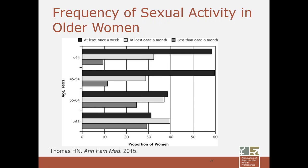From the same study, this slide works well for discussing norms of frequency of sexual activity in older women. People often ask whether their desire and frequency of sex is normal or abnormal. As one might expect, sexual activity in older women by age category was decreased but not absent. Less frequent activity — at least once a month or less than once a month — was increasing in older women, but certainly not absent.